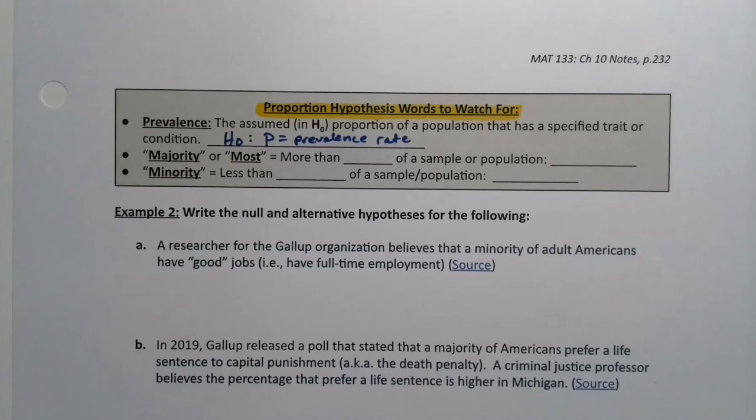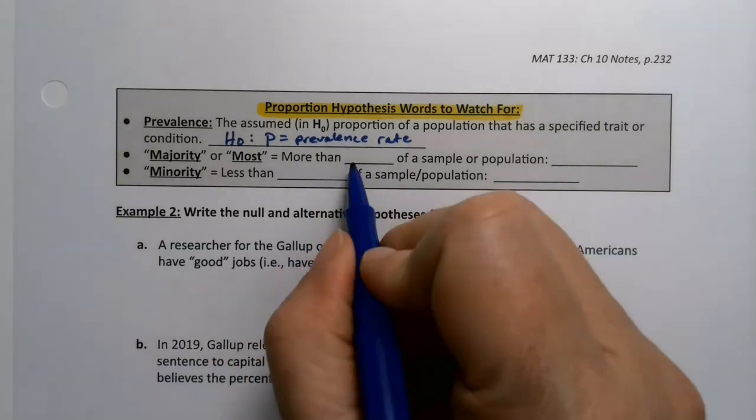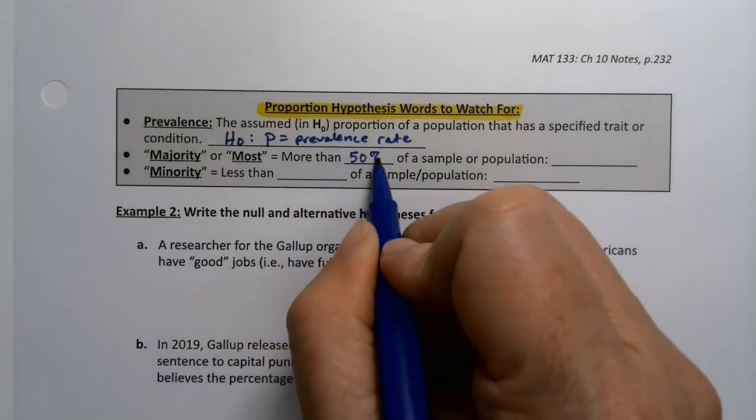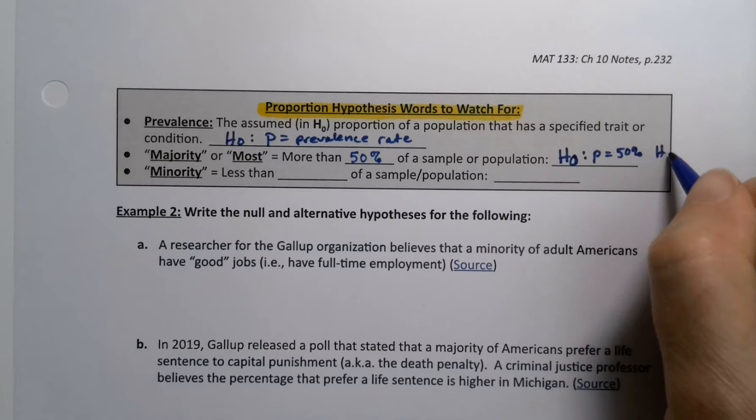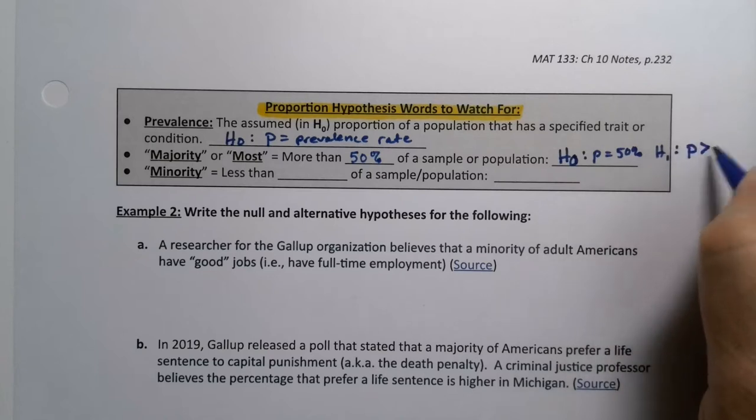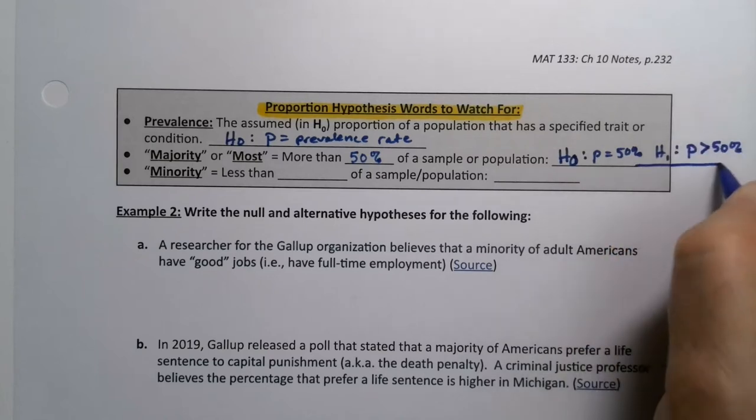It's the proportion of a particular disease in a population, but you can have it in other contexts as well. Next, the word majority. Majority or most, and most is particularly sneaky because they'll say most people think this. Well, they're implying more than 50%, which would mean your H0 would be P equals 50% and your alternative would be P is greater than 50%.